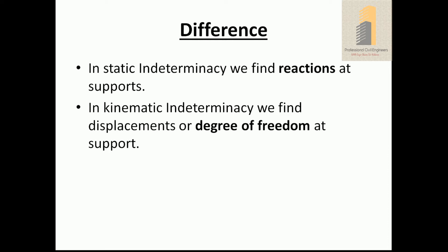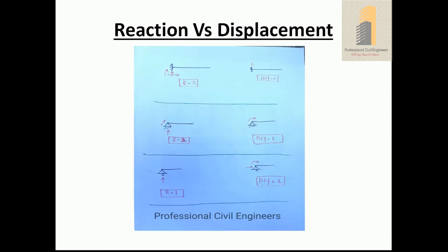The basic difference between static and kinematic indeterminacy is: in static indeterminacy we find reactions at supports, and in kinematic indeterminacy we find displacement or degree of freedom at supports. For a fixed support, reactions are three — horizontal, vertical, and moment — and there is zero displacement, zero degree of freedom. Reactions and displacements are opposite to each other.